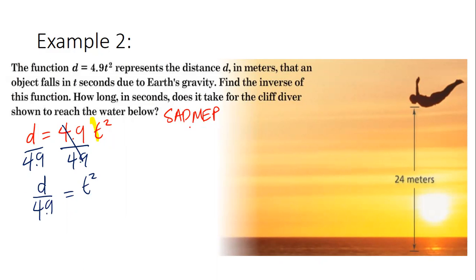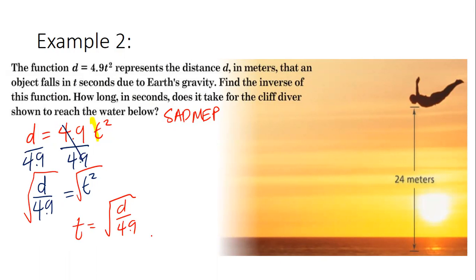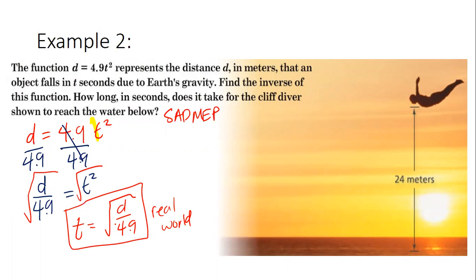Now I'm at E — exponent. How can I get rid of an exponent of two? I'm going to take the square root. So now t is by itself: t equals the square root of d over 4.9. We're going to leave it as a positive because this is a real world situation. Technically when you take the square root you create a positive and negative, but we're looking for positive time. So t equals the square root of d over 4.9 — that is my inverse function.